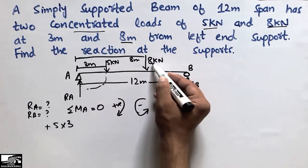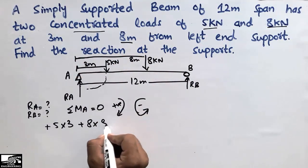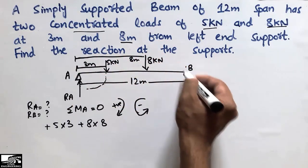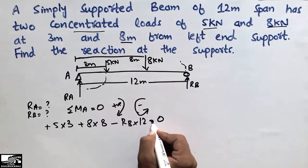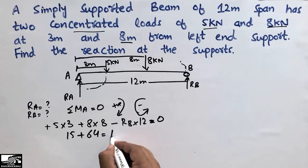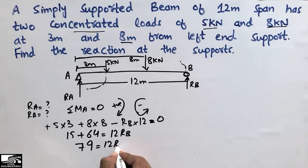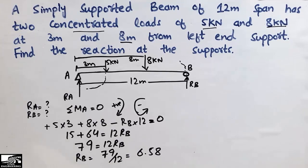The 8 kN load also acts clockwise around A with a moment arm of 8 meters, giving 8 × 8 = 64 kN·m (positive). RB acts anti-clockwise around A with a moment arm of 12 meters (negative). Setting the sum of moments at A equal to zero: 15 + 64 − 12·RB = 0, so 12·RB = 79, giving RB = 6.58 kN.